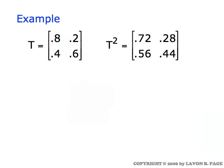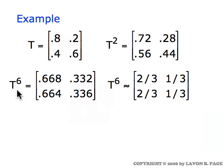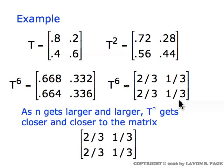We'll start with a simple example, the transition matrix T, as shown here. If you calculate T squared, you get the numbers I'm showing. If you go on up to larger powers, for example T to the sixth power, notice that the numbers that appear in T to the sixth power are somewhat close to two-thirds and one-third in the first row, and also two-thirds and one-third in the second row. That trend continues: if you take larger and larger exponents and compute the transition matrix raised to larger and larger powers, you'll find that what you're getting gets closer and closer to the matrix where each of the two rows looks like two-thirds and one-third.